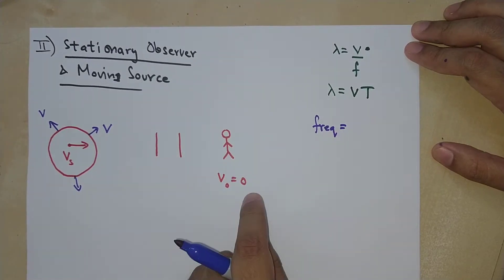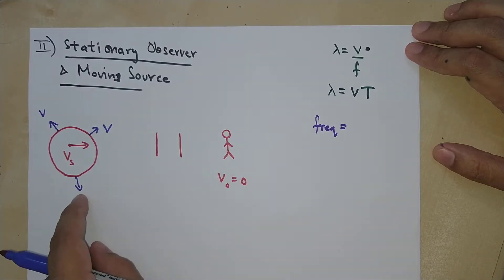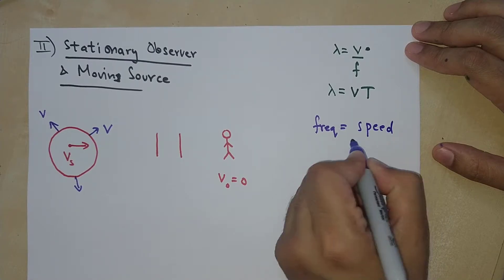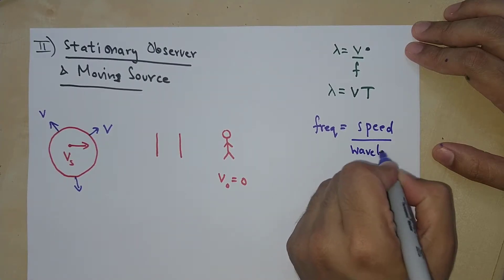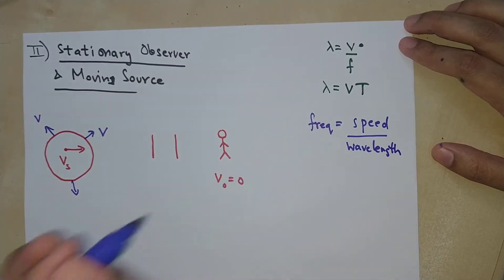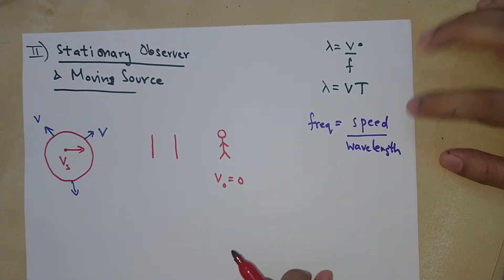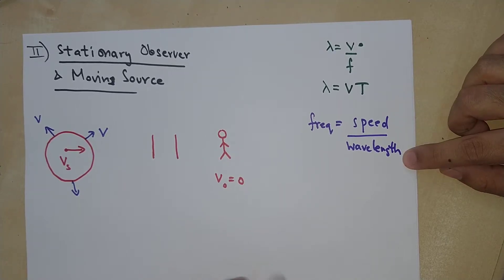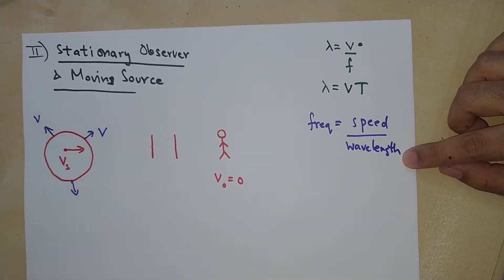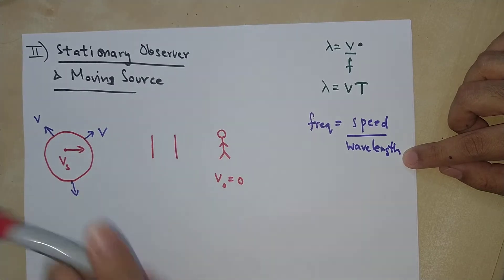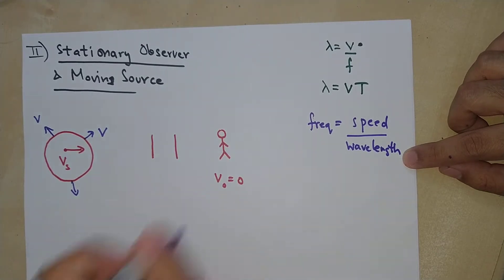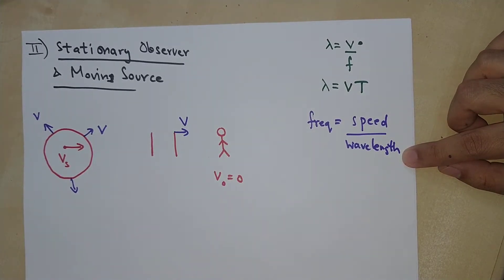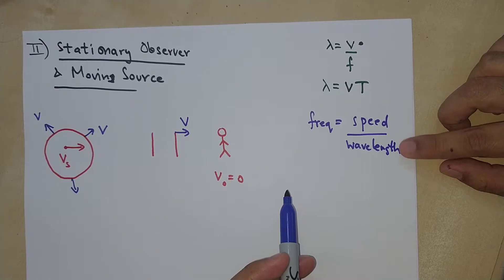The frequency that the observer listens to is going to be modified because of the motion of the source — frequency equals speed over wavelength. In this case, the speed is not being modified; the wavelength is. The speed of the sound wave is independent of the speed of the source, so when these sound waves approach the observer, their speed is just going to be V. But now the wavelength is modified.